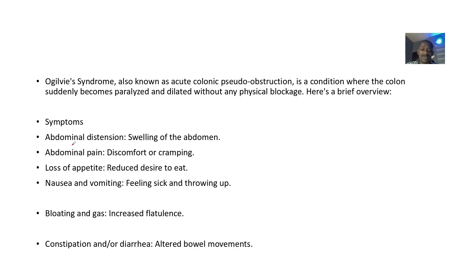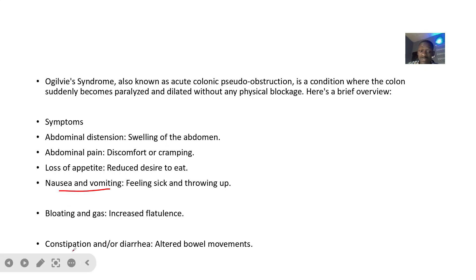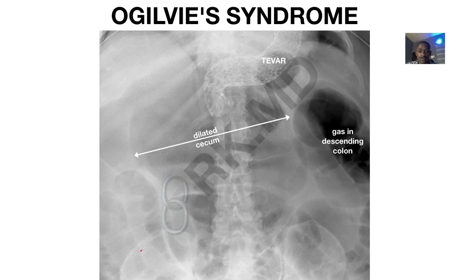Symptoms include abdominal distension — the swelling of the abdomen — abdominal pain, loss of appetite, nausea and vomiting, bloating and gas, and constipation or diarrhea. On X-rays, you can see gas distending the descending colon — it appears as a dilated segment.